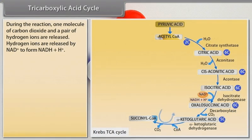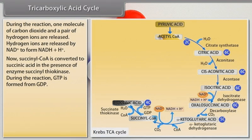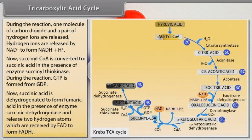Hydrogen ions are released by NAD⁺ to form NADH + H⁺. Succinyl CoA is converted to succinic acid in the presence of enzyme succinyl thiokinase. During the reaction, GTP is formed from GDP. Succinic acid is dehydrogenated to form fumaric acid in the presence of enzyme succinic dehydrogenase and releases two hydrogen atoms, which are received by FAD to form FADH₂.